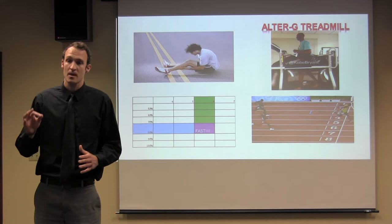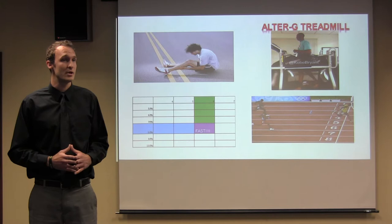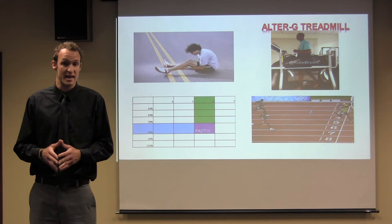For someone who normally runs a 10-minute mile outside, they can, at 50% of their body weight on an Alter-G treadmill, run a 6-minute mile. And for someone who normally runs a 6-minute mile outside, they can, at 50% of their body weight, run a 4-minute mile on an Alter-G treadmill.